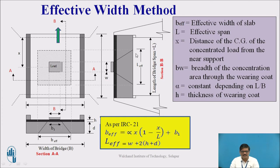The dispersion, whatever is taking place, that we call it as L effective. And that is given by the formula W plus 2 times H plus D. Indirectly, it means that the dispersion is at an angle of 45 degrees.